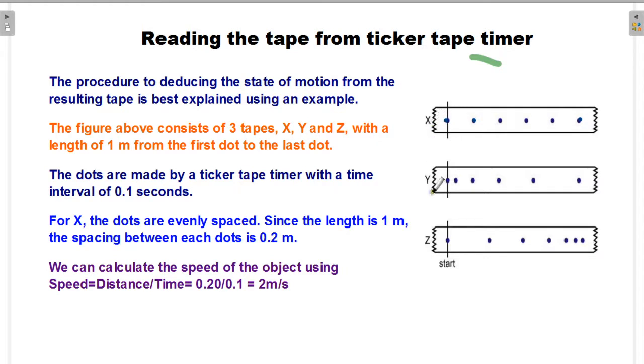In the figure above, there are three tapes: X, Y, and Z, with a length of one meter from the first dot to the last dot. The dots are made by a ticker tape timer with time intervals of 0.1 seconds.